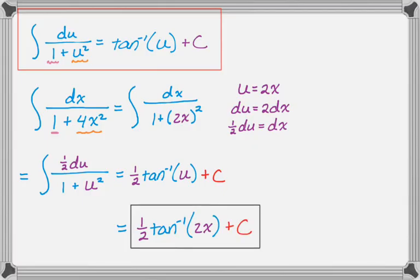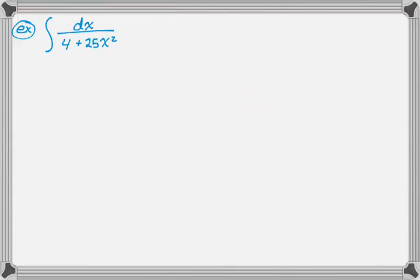All right, I'm going to do another example. So here we have the integral of dx over 4 plus 25x squared. So look at it, and immediately, you don't have a 1. So what I'm going to do is factor a 4 out of everything in the denominator and pull it out as 1 fourth. So 1 fourth, the integral of dx, 1 plus, and now I have 25x squared over 4. I look at that. That is supposed to be u squared.